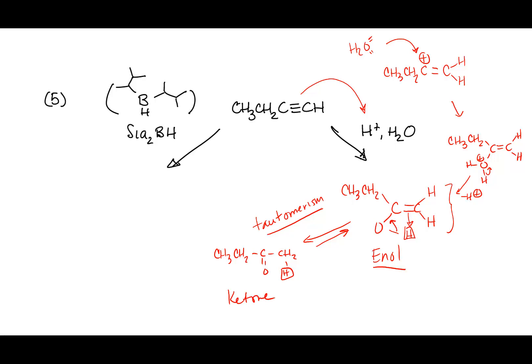If I want anti-Markovnikov addition of H and OH, I go back to last semester — we use BH3 and H2O2. That's basically what we're going to do here too, adding boron then hydrogen peroxide. For Friday, the reading assignment is online starting in the next chapter — read those sections in the book or watch the video, and post questions on Piazza. Beginning-of-class quizzes start next week, not this Friday.